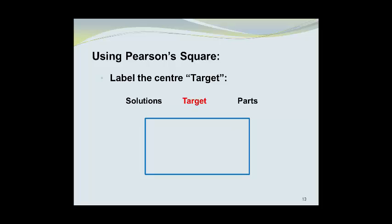Now you can begin adding values to Pearson's Square. The starting solutions are A and B, and they will go in the positions here on the left-hand side of the rectangle, as A and B. Then we can put in the target value in the middle of the rectangle, and we'll call that C.